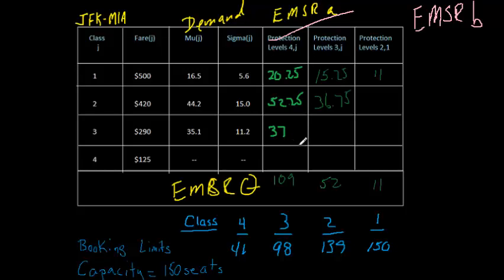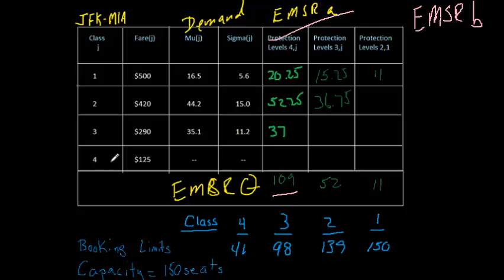So if you viewed those earlier videos, you'll know that we were after this protection level here. The solution we got to with EMSR-A was that we should protect 109 seats for fare classes 3, 2, and 1 together, so that those seats are not sold to customers who are only willing to pay $125. The way we got to 109 is we found protection levels between different pairs of fare classes: 4 to 3, 4 to 2, and 4 to 1.